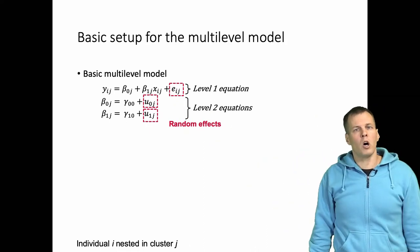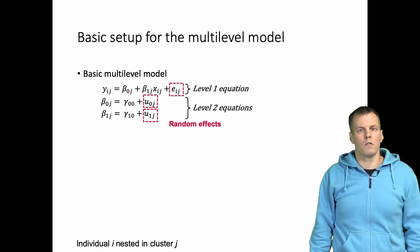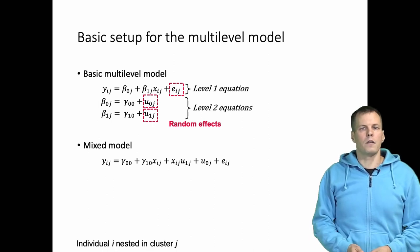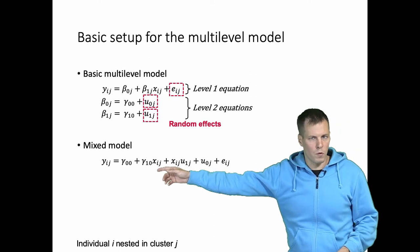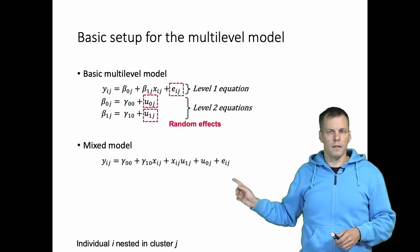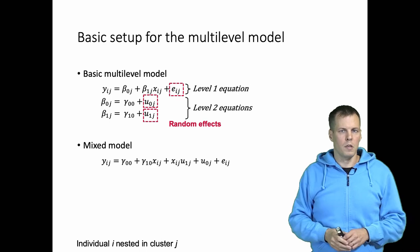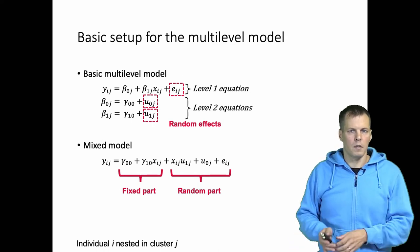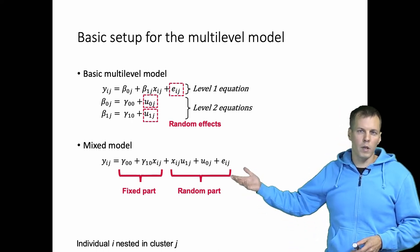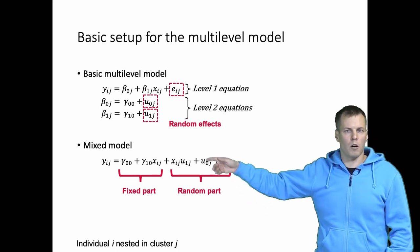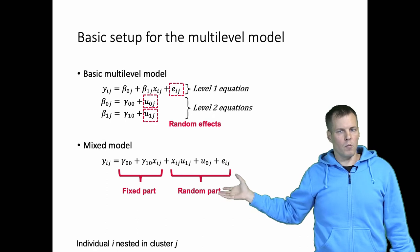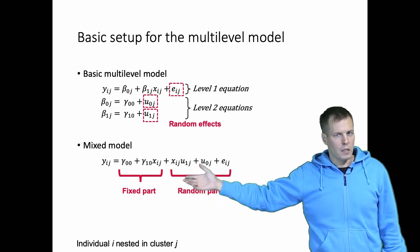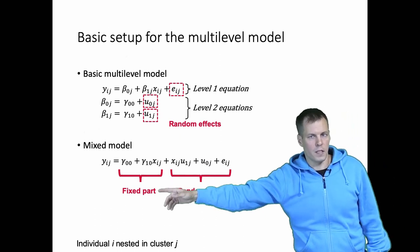This same model can be expressed in a single-equation format, where we write the equation for y as a function of the gammas from the level-two equations and the observed values from level one. It's called a mixed model because it has a fixed part and a non-trivial random part. Normally we don't refer to a simple regression model as a mixed model because there is just one error term, but here we have three random effects that we estimate from the data — hence the name mixed model.